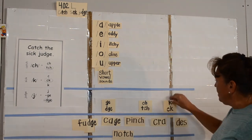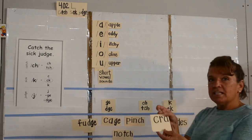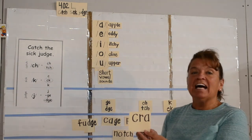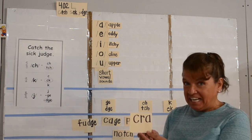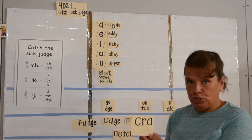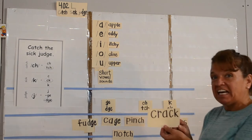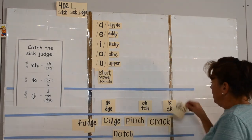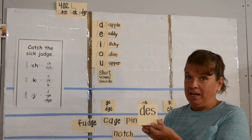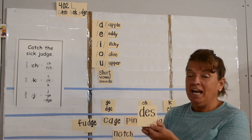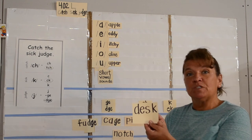Now we're going to take a look at the K or C-K for the kuh sound. The word is crack — K-R-A-K. I do hear the kuh sound at the end, and right in front of that kuh sound I hear an ah, which is a short vowel sound, so I will use the C-K spelling. The word is desk — D-E-S-K. I do hear the kuh sound at the end, but I do not hear a short vowel right in front of the kuh, so I use the K spelling.